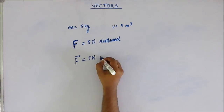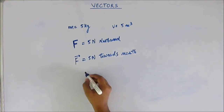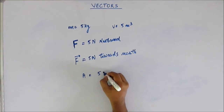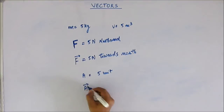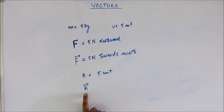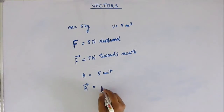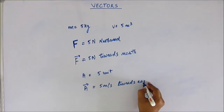So we write F-vector is equal to 5 Newton. Similarly, for any vector A — if we are using the symbol A for a scalar quantity, we just use the value and its unit. But if we are using the same letter A for a vector, we add an arrow at the head of that letter, and we read it as 'A vector'. So suppose A vector is representing velocity, we read it as A vector is equal to 5 meter per second towards east.